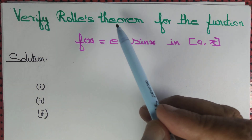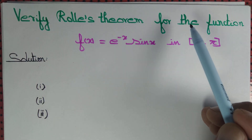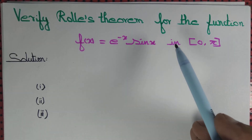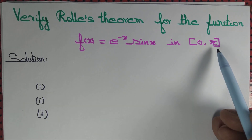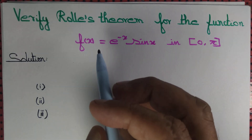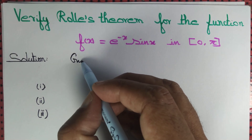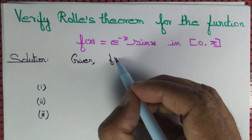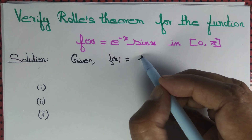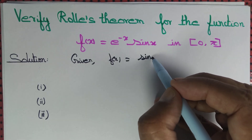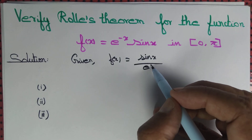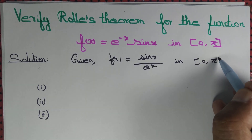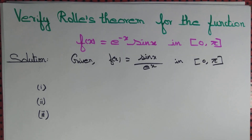Let us verify Rolle's theorem for the function f(x) = e^(-x) sin(x) in the interval [0, π]. We are given f(x) = sin(x) / e^x in the interval [0, π]. To verify Rolle's theorem, we need to make sure that three criteria are satisfied.